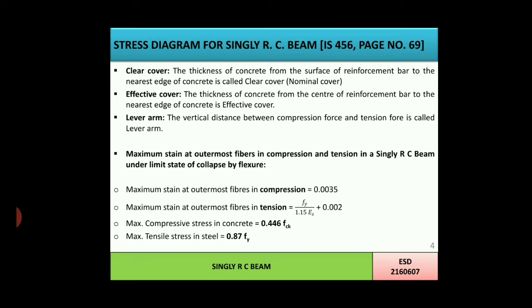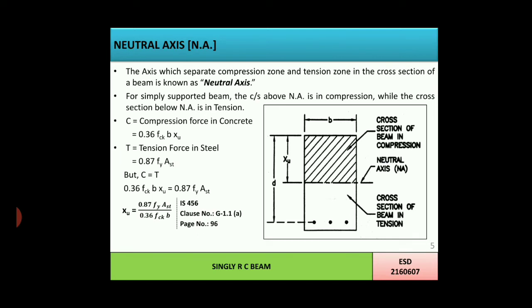Lever arm is the vertical distance between the compression force and the tension force. From the strain and stress diagram: maximum strain at the outermost fiber in compression is 0.0035; maximum strain at outermost fiber in tension is Fy/(1.15·ES) + 0.002; maximum compressive stress in concrete is 0.446FCK; maximum tensile stress in steel is 0.87Fy·AST. The neutral axis separates the compression zone and tension zone. For a simply supported beam, the cross section above the neutral axis is in compression and below is in tension. Equating compression and tension forces gives the formula for XU: XU = 0.87Fy·AST / (0.36FCK·B), as given in IS 456, page 96, clause G1.1A.